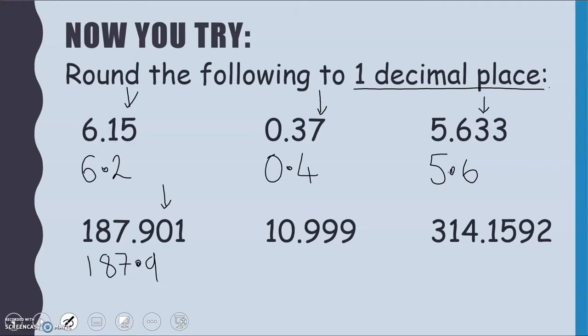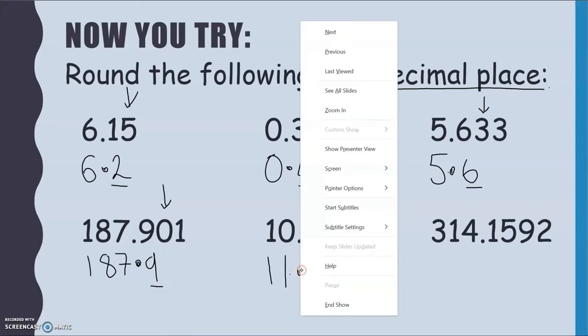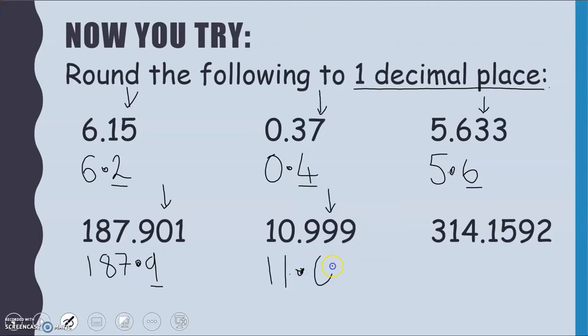10.999. Well, I'm looking at this middle 9 here for our second decimal place. That tells me that I would round my 9 up. Well, if 9 goes up 1, that would become 10. So 10 is going to become 11 here. And it's one decimal place. And do we notice how I have one number after my decimal place each time? So I'm going to fill in with a 0 so that I've got one number after my decimal place here.